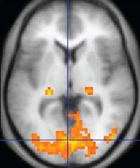MRI is the investigative tool of choice for neurological cancers, as it has better resolution than CT and offers better visualization of the posterior cranial fossa, containing the brainstem and the cerebellum. The contrast provided between grey and white matter makes MRI the best choice for many conditions of the central nervous system, including demyelinating diseases, dementia, cerebrovascular disease, infectious diseases, Alzheimer's disease, and epilepsy.